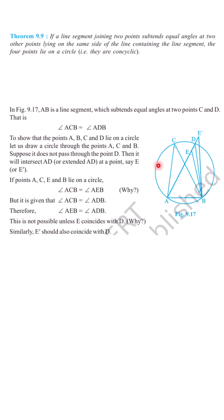So let us draw a circle through these points. Suppose it does not pass through point D. We assume this. So it will intersect AD at a point, let's say E or E dash.